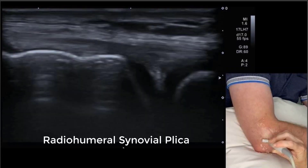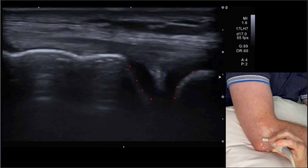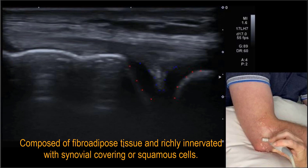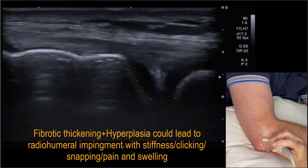Underlying the ligaments is the joint capsule, and in some patients there's a radiohumeral synovial plica — an embryological remnant that may not always be present. We need to be familiar with the look of cartilage around the capitellum and radial head and not confuse that with synovitis or fluid.